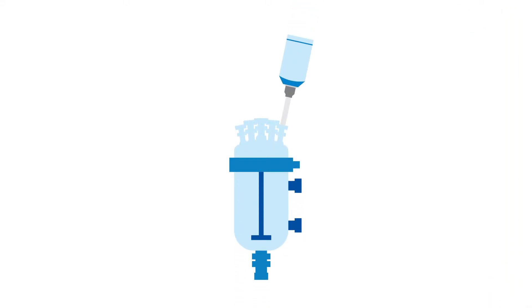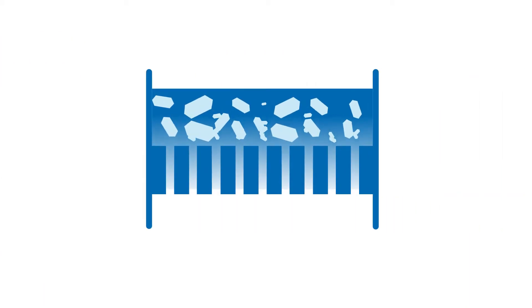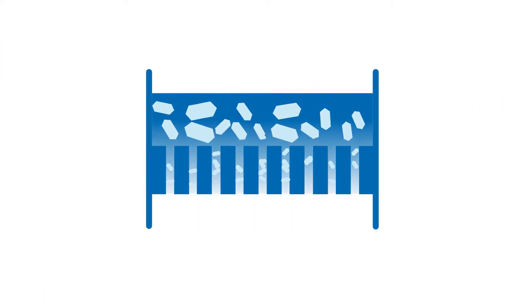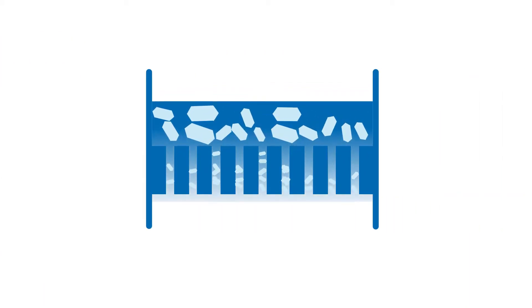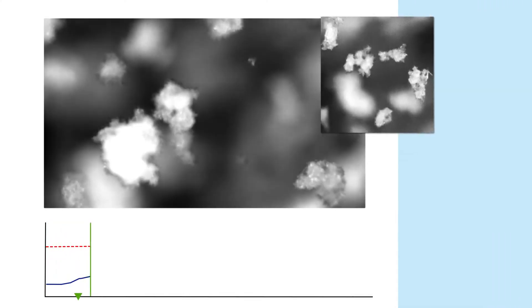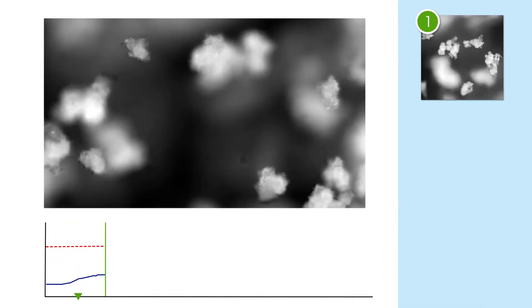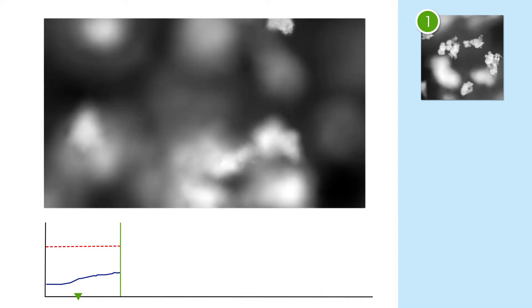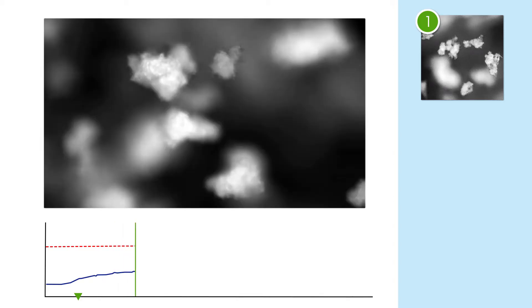For this crystallization process, real-time microscopy was used to understand the mechanism that was causing slow filtration of the isolated material. The first important crystallization mechanism that was observed was the growth and agglomeration of the seeds soon after they were added to a supersaturated solution.